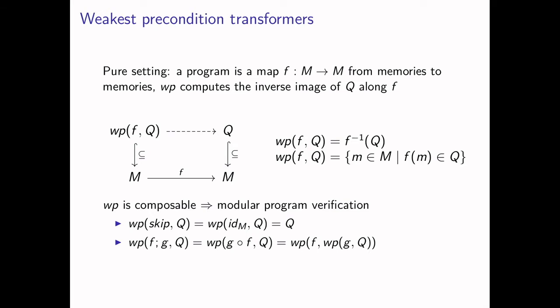Being a bit more concrete, we can see a program as a map F from memories to memories. What WP does is it computes the inverse image of predicates. So we have a predicate Q which is a subset of M, and the WP of F and Q is the inverse image of Q along F. Crucially, this WP is composable: the WP of skip and Q is just Q, and if you have a program composition F composed with G, then the WP of F composed with G is the composition of the individual WPs in a contravariant manner.